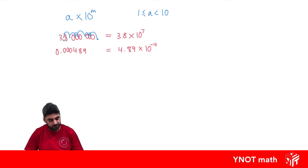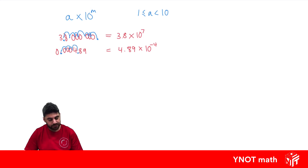For our other example, the decimal place is at the start and we want to put it after the 4. We count the jumps: 1, 2, 3, 4 — and that's why this is to the power of minus 4.